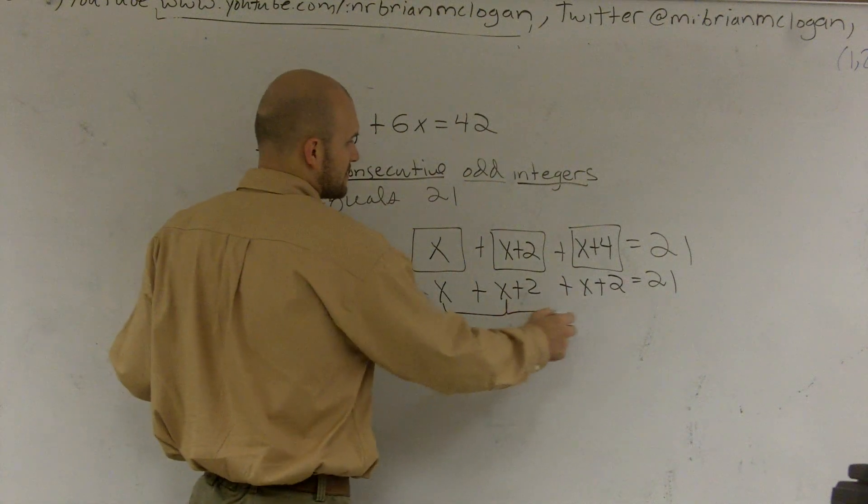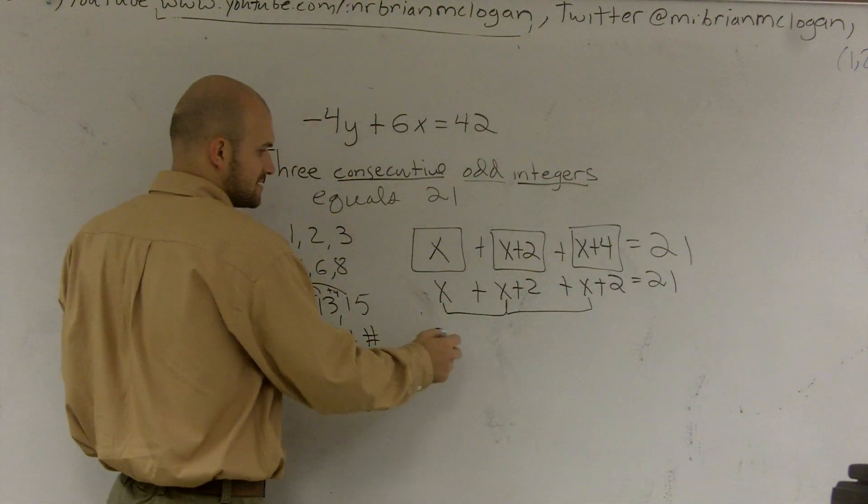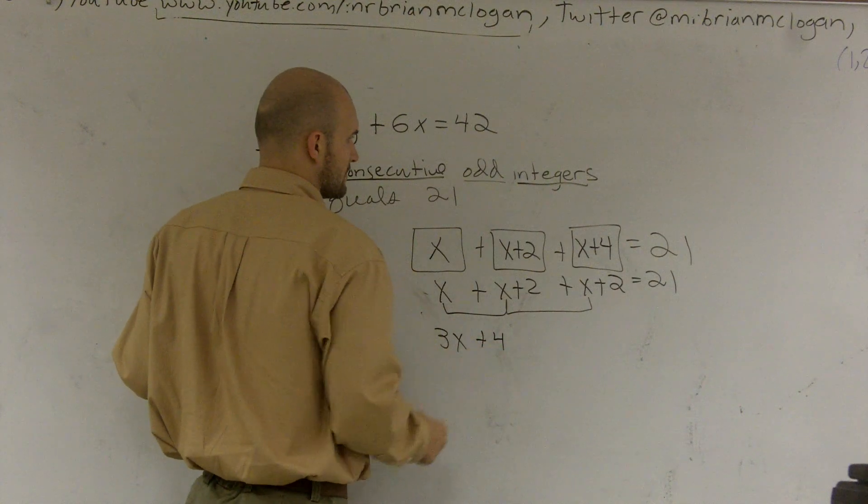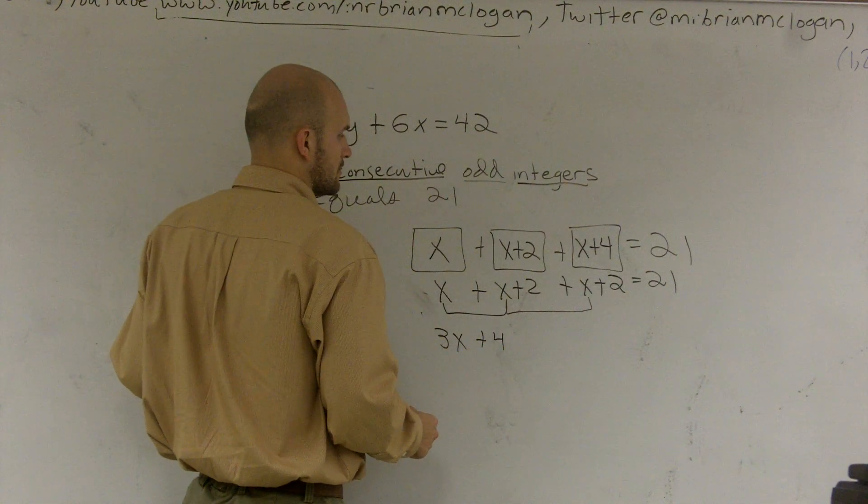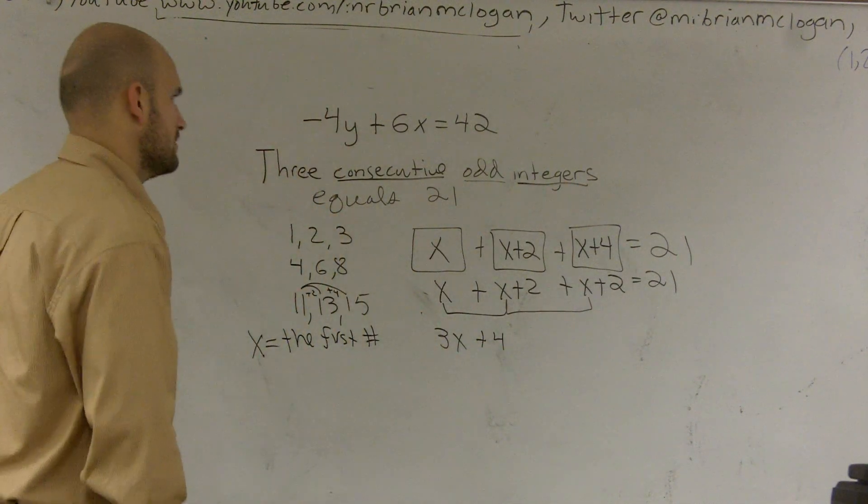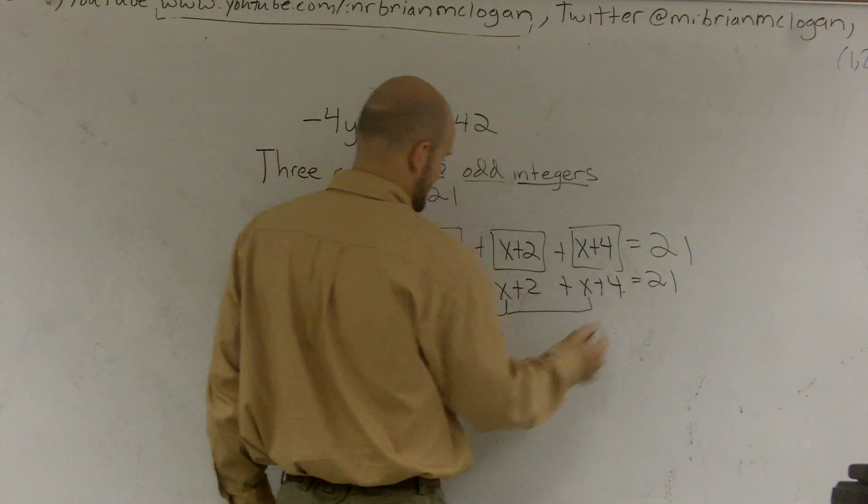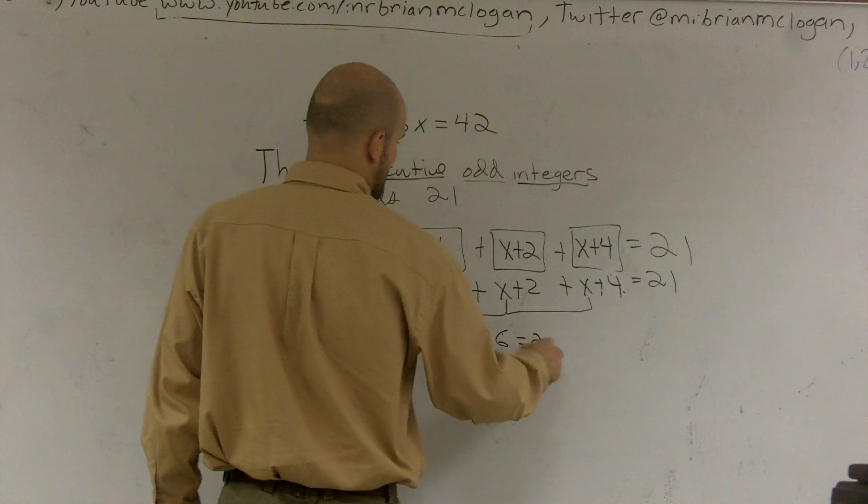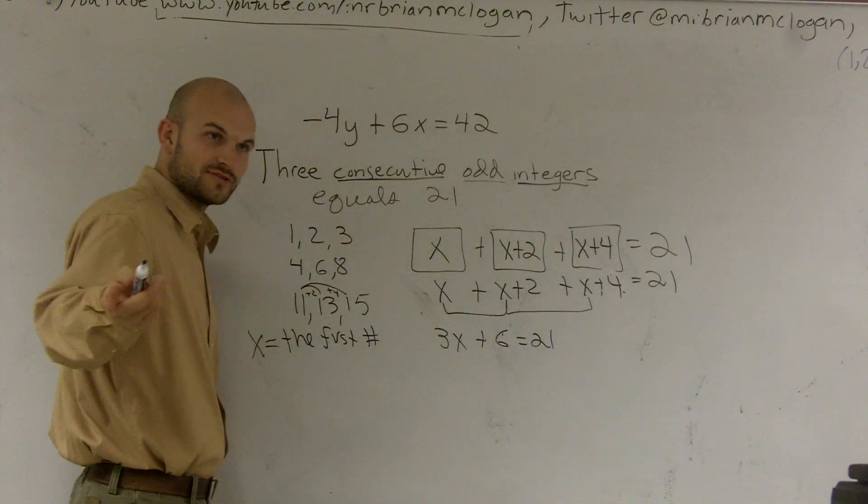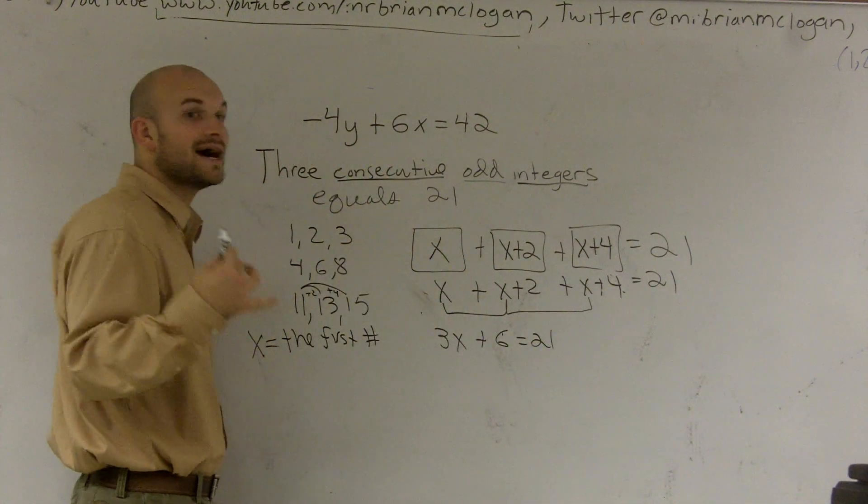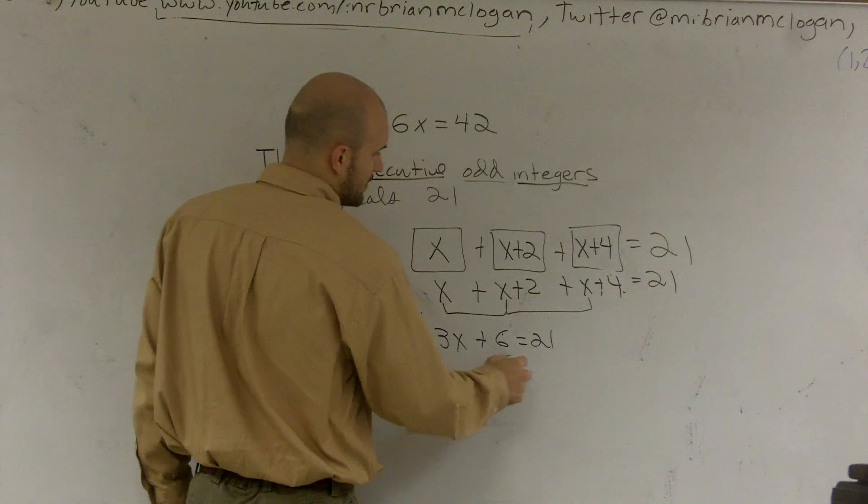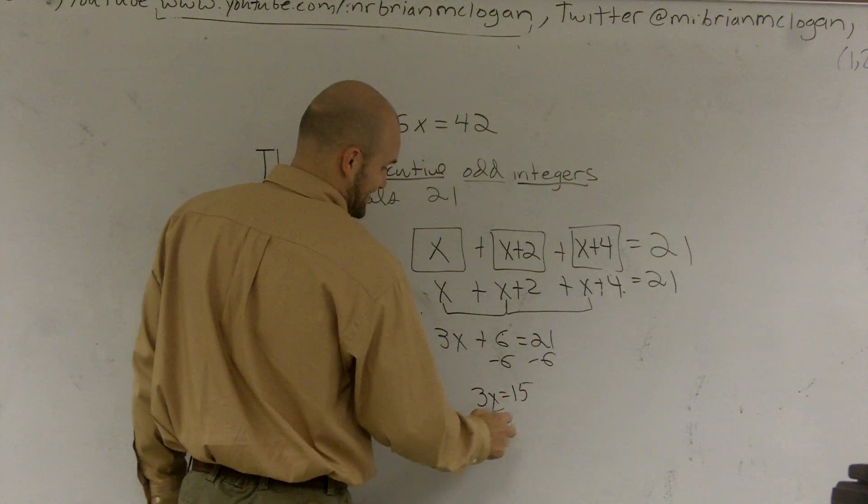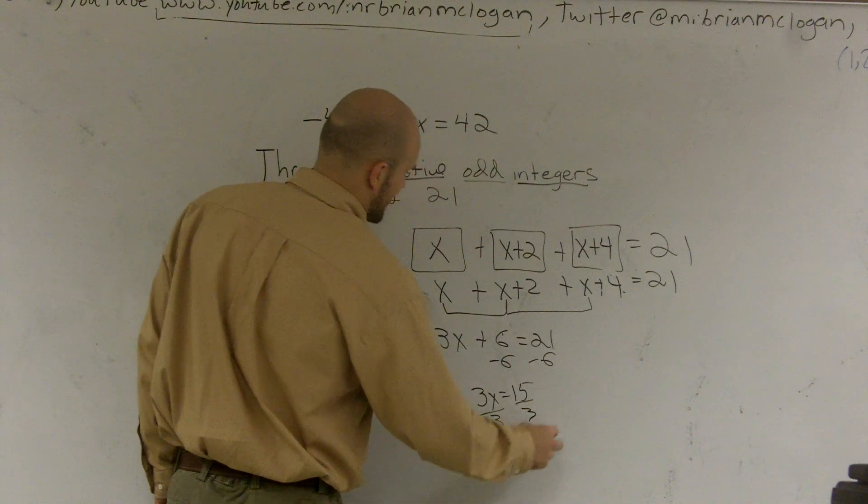Now I can combine my like terms. I can only add X to the X's. So I get 3X plus 6 equals 21. Now it's a two step equation. And you guys should be like, oh, thank God. It's a two step equation. I can solve this. Minus 6. 3X equals 15. So X equals 5.